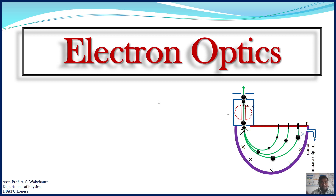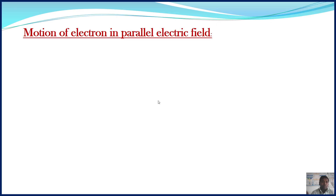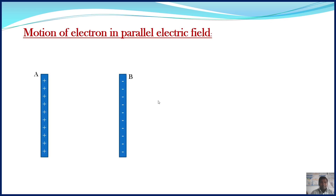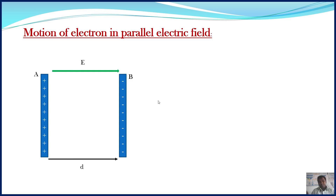This is the second video regarding Electron Optics. In this video, we are going to talk about the motion of an electron in a parallel electric field. Consider two metal plates A and B. Metal plate A is positively charged, metal plate B is negatively charged using the battery. The separation between the plates is d and the electric field developed between the plates is E.